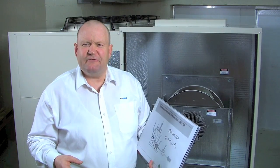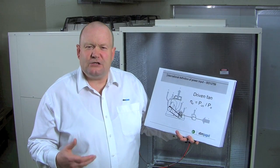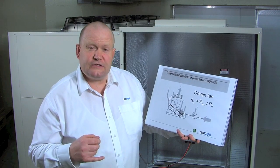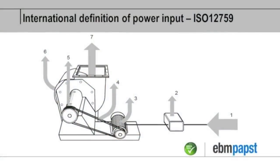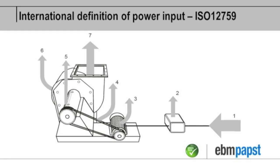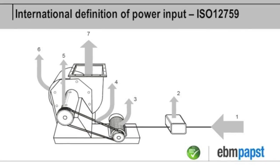The standard that's been used to create these regulations is ISO 12759, and here I've got a slide showing the definition of fan efficiency in that standard. Here you can see that the fan is taken as a system as a whole and the efficiency is the divisor between the fan input power to the whole fan system and the air output power.